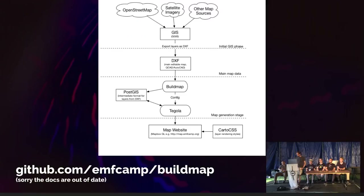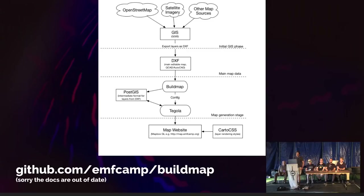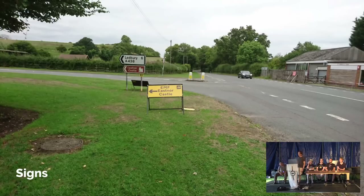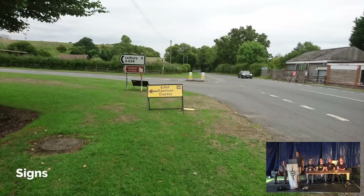There's a diagram of that — used to be much more complicated, but this is the simplified new diagram. The docs are out of date, sorry, as always. We also got signs this year. The council said we should have signs to tell people to slow down, so I called the AA and they made some signs for us. It was the easiest supplier I had to deal with, and they didn't even charge us very much. I hope people found them helpful.